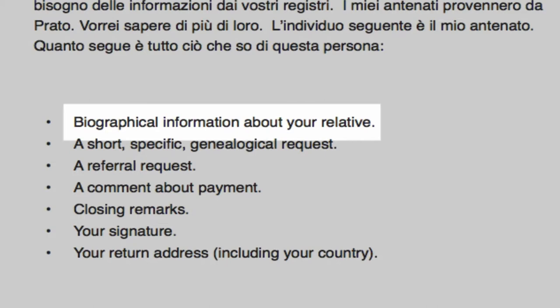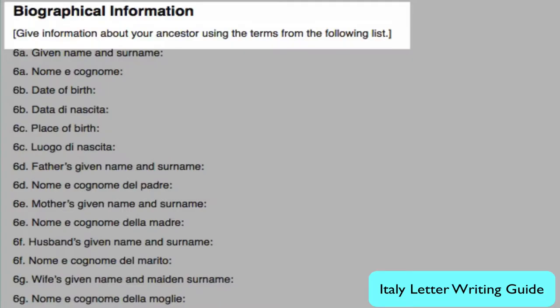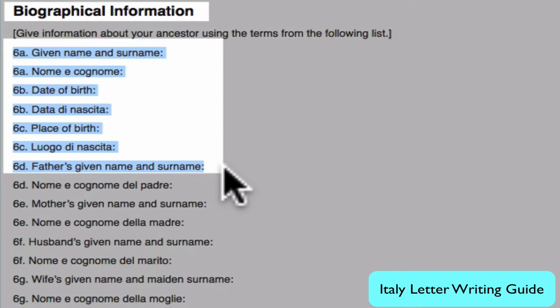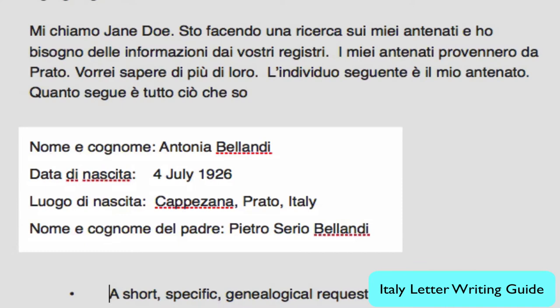Next, we will give as much biographical information as we know about the relative we are inquiring about. The letter writing guide provides several options. I'm just going to select name, birthdate, birthplace, and father's name in this case.